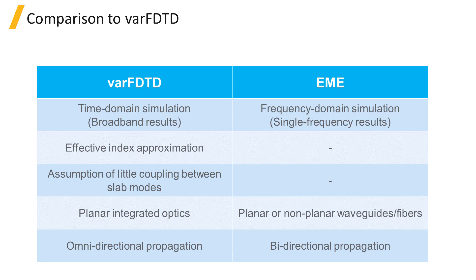varFDTD is based on collapsing a 3D geometry into a 2D set of effective indices. An assumption of this method is that there is little coupling between different supported slab modes. It works best with waveguides made from planar structures.